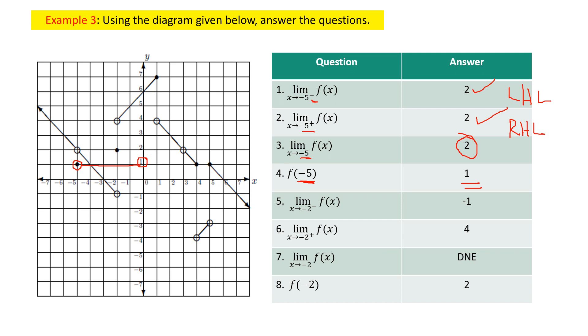Similarly, for question 5 the value is −1, and for question 6 the value is 4. Since these two values are not equal, the limit as x approaches −2 does not exist. For the last question, f(−2) is found by locating the dark circle at x = −2, giving a y-value of 2, so f(−2) = 2.